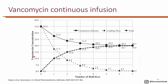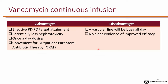This underdosing can be fixed by giving a loading dose. Without a loading dose you get a slow rise; with a single loading dose you get a faster ramp-up; and with both a loading dose and continuous infusion you get a peak followed by a flat line after 24 hours. That would be the best approach to achieve the right AUC.